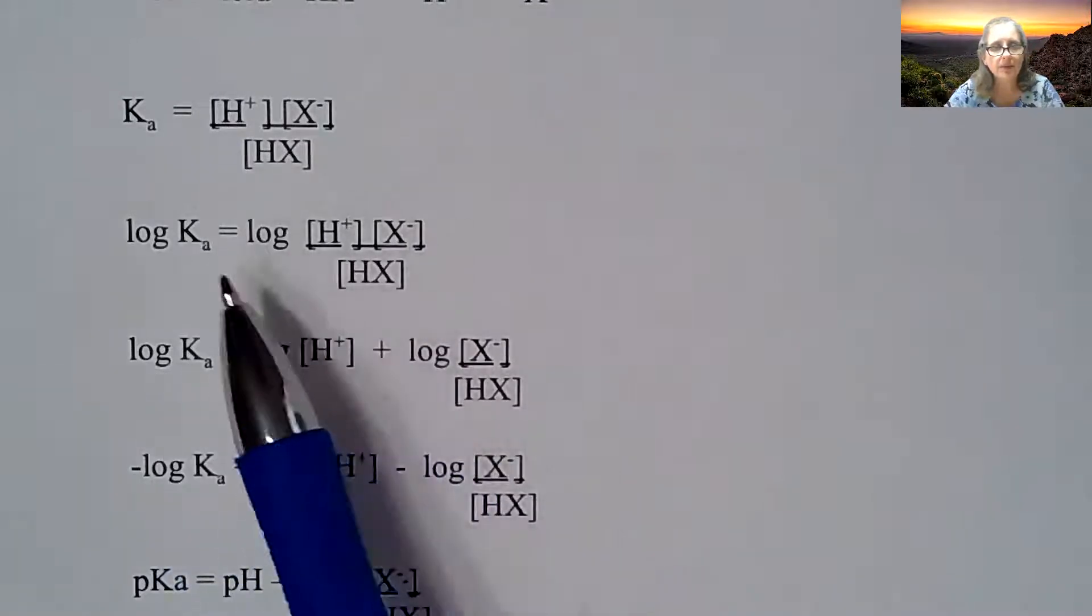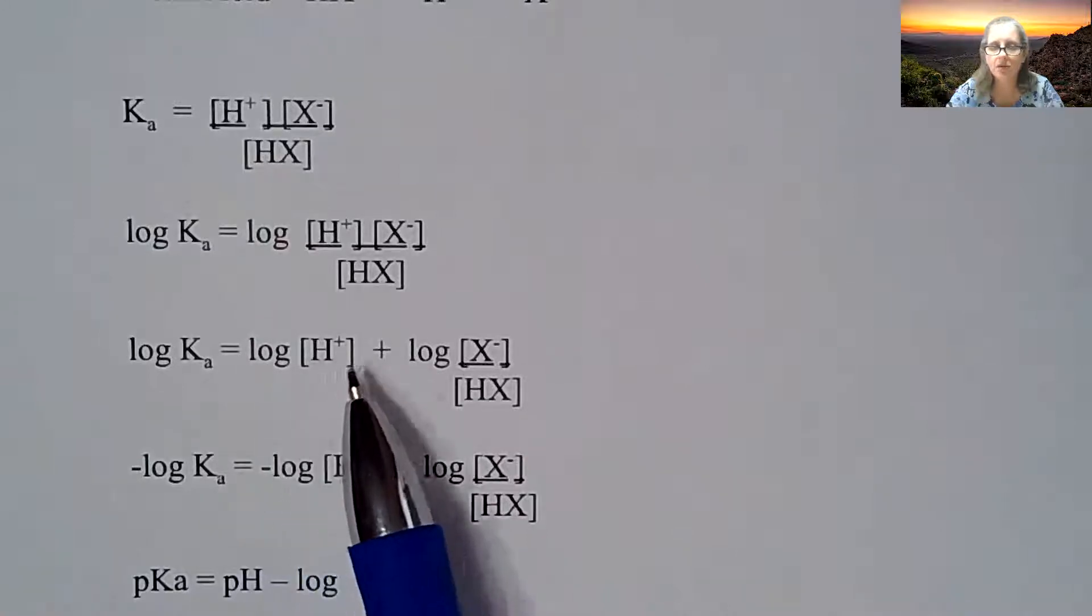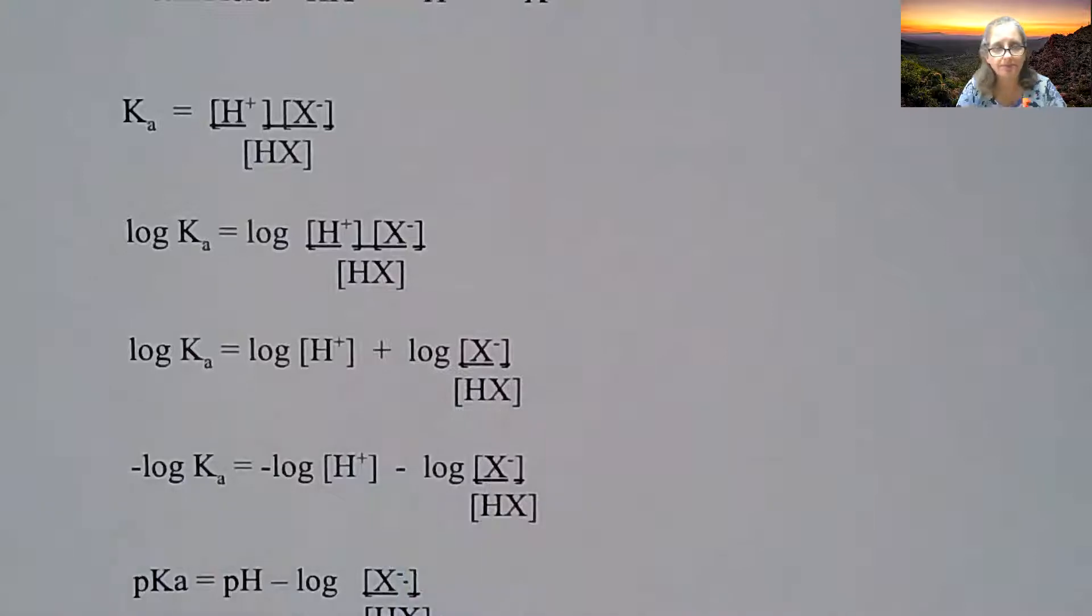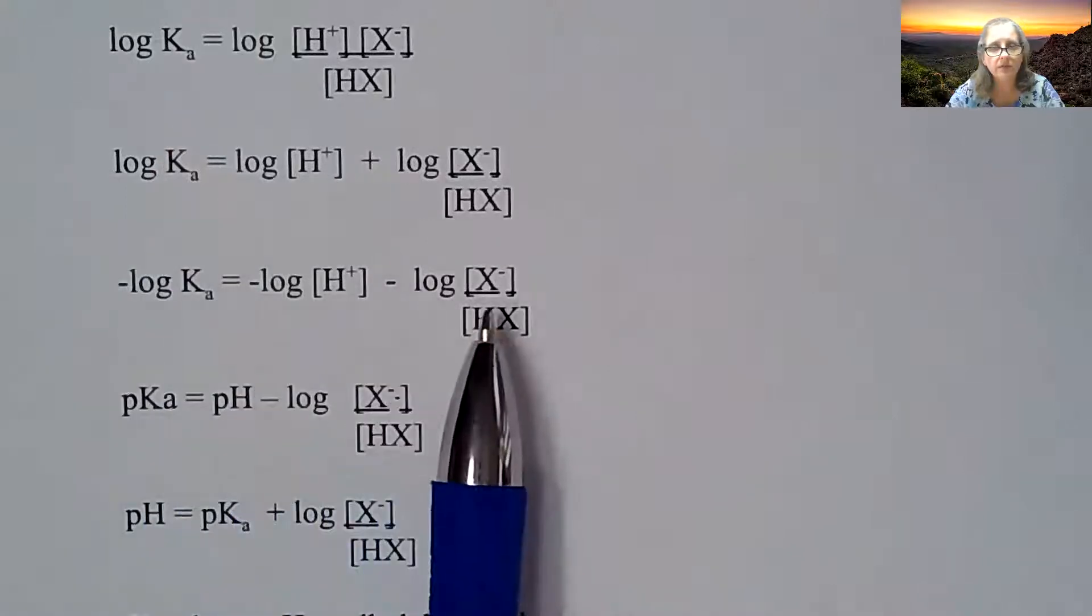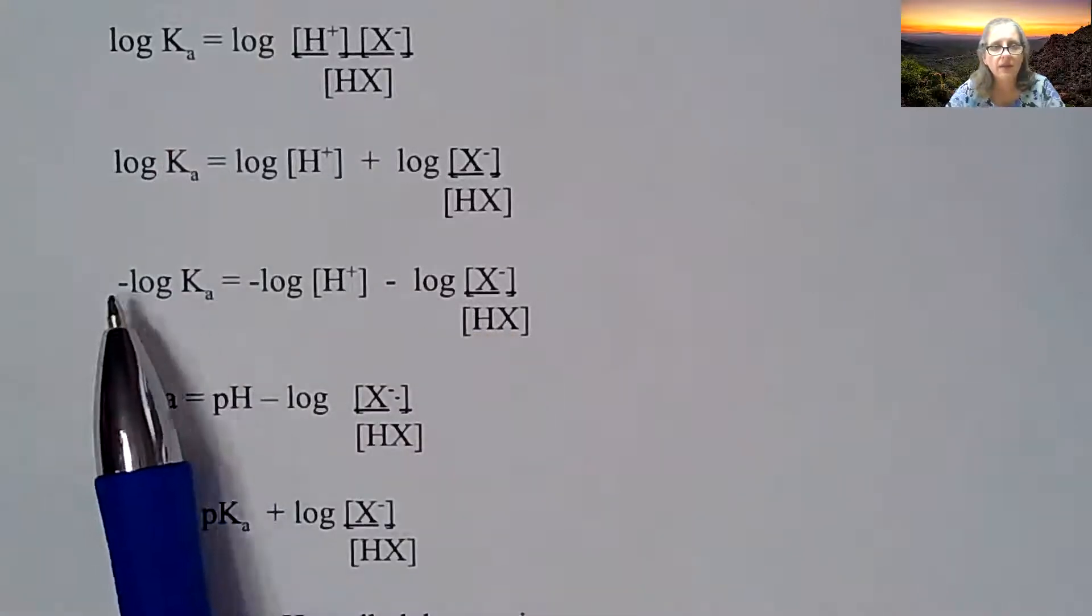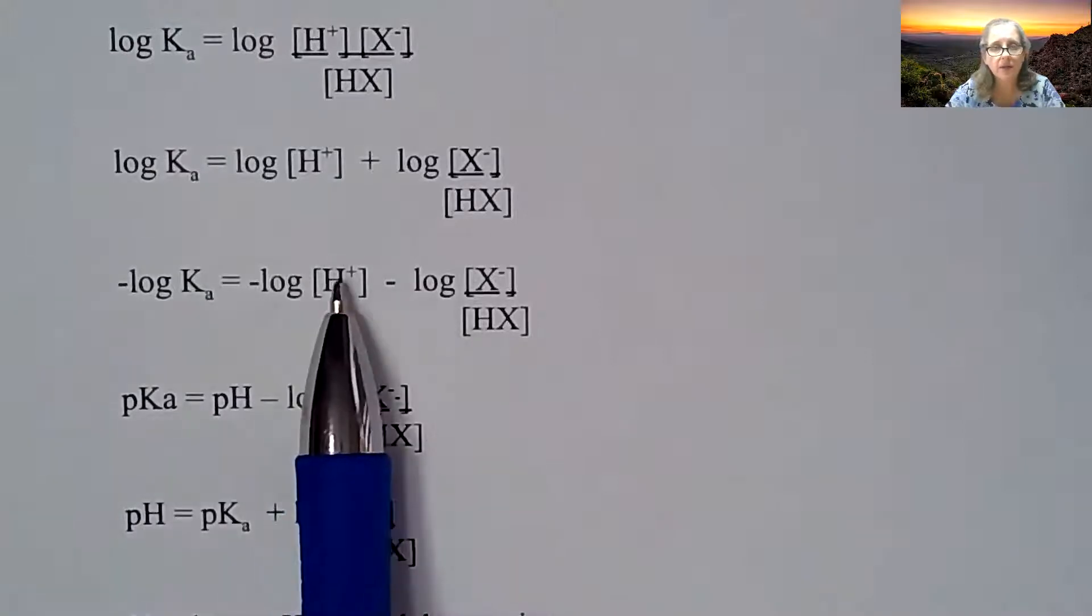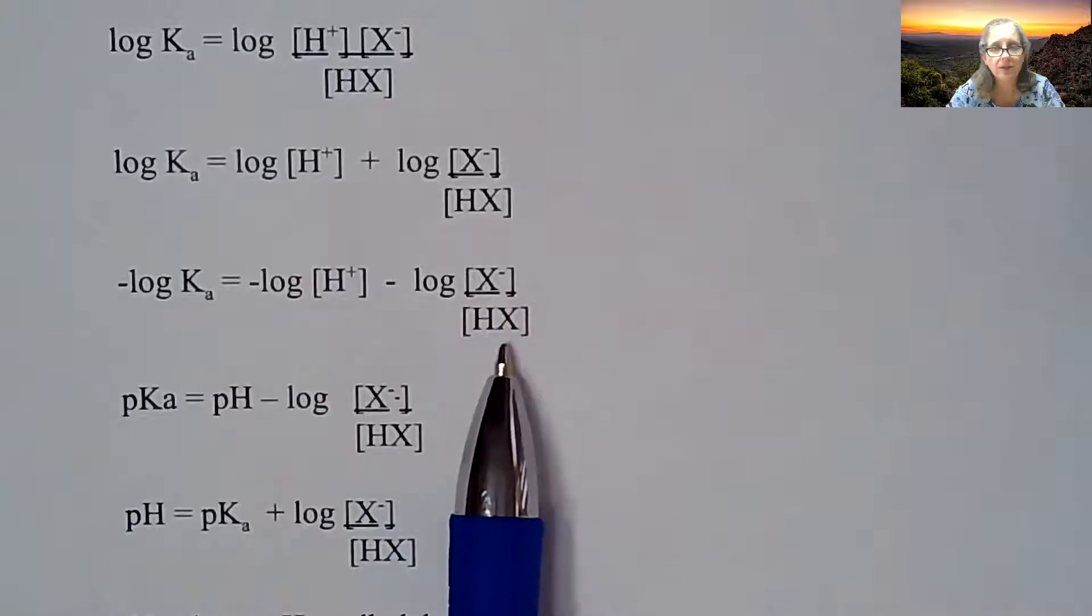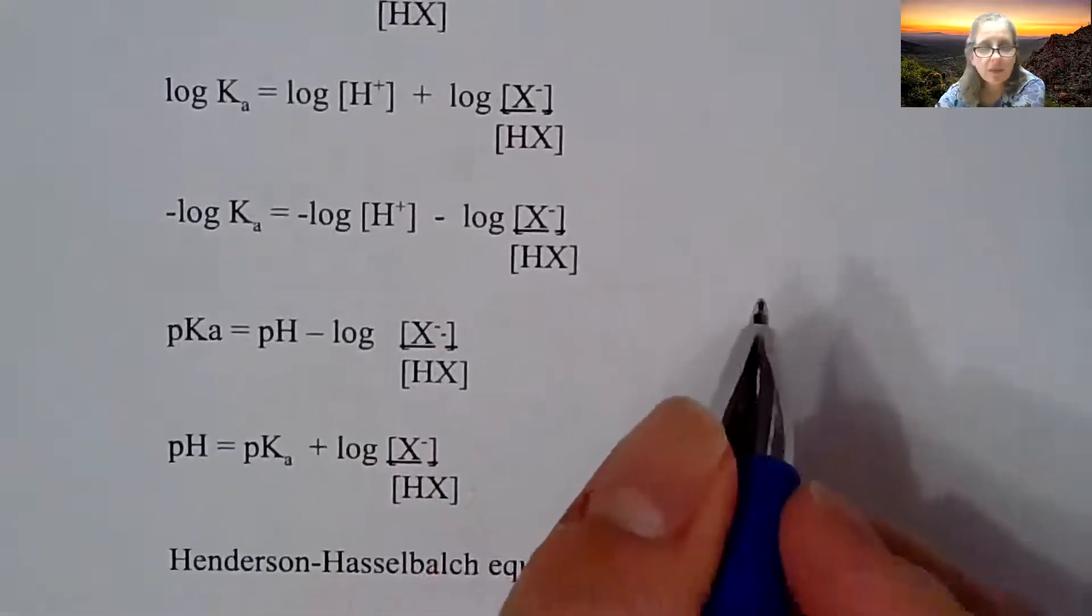So if I separate this out and find log of H+, which of course we know is pH, then just take the log of X- over HX. Then if I take the negative of everything, the negative log of Ka is the pKa, the negative log of H+ is the pH, and then you're left with the negative log of X- over HX.